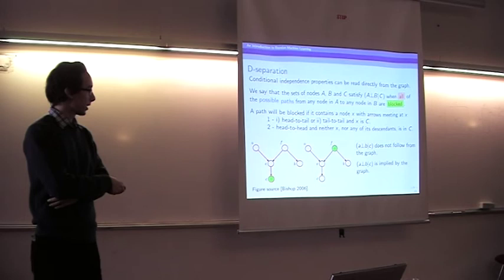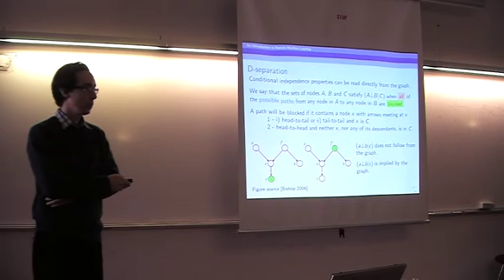To check conditional independence between nodes A and B, we look for all paths between them. If there is only one path, we check whether the nodes in that path satisfy the blocking conditions. We then check whether A and B are conditionally independent given various conditioning sets.